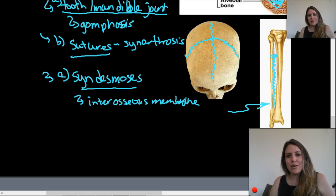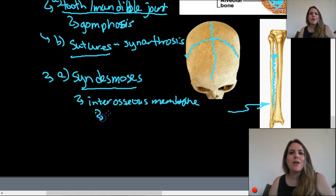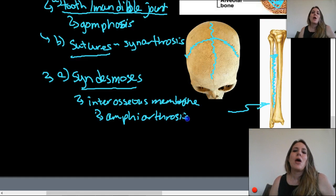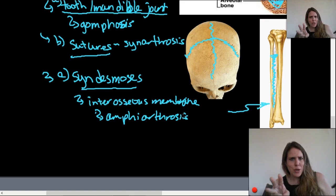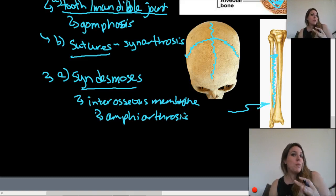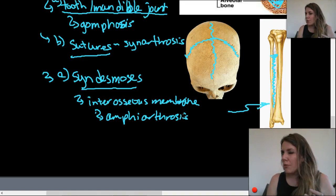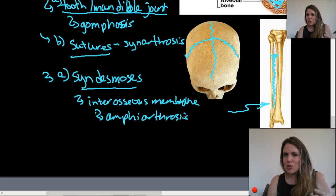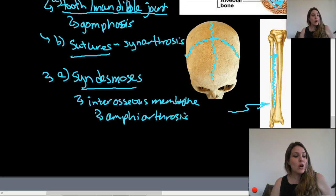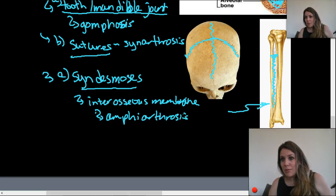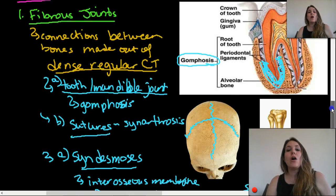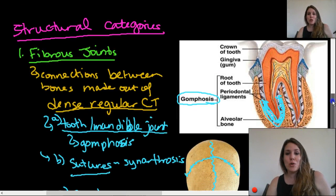To summarize: the interosseous membrane joints are functionally amphiarthroses, but structurally syndesmoses. The three kinds of fibrous joints are: sutures, the tooth-mandible gomphosis, and syndesmoses. These are all fibrous joints — one of the three structural categories.